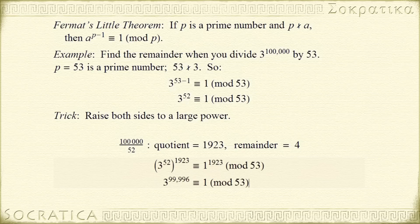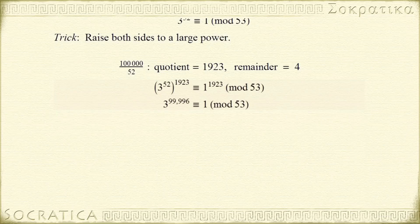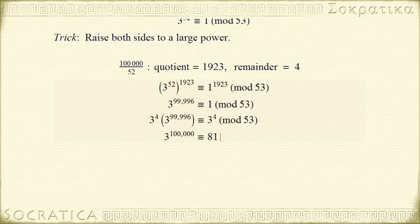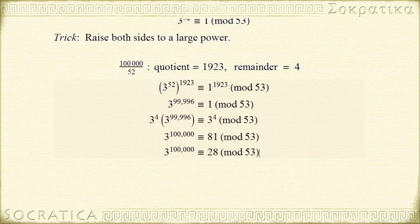We're almost to 100,000 on the left-hand side, so we're going to multiply both sides of this congruence by 3 to the 4th. That gives us 3 to the 100,000th power is congruent to 81 mod 53. We can simplify the right-hand side: 81 is congruent to 28 mod 53. So if you divide 3 to the 100,000th power by the prime number 53, you will get a remainder of 28.